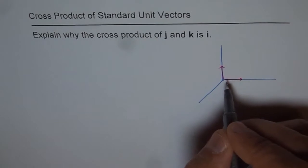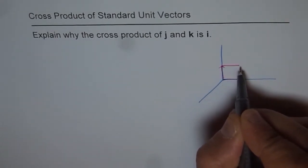Right? So these vectors, j and k, form a square of unit dimension.